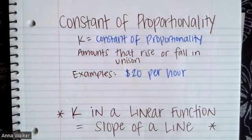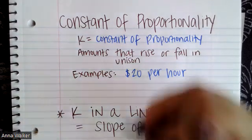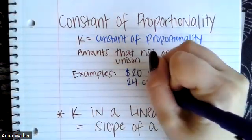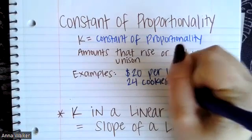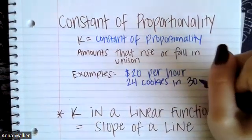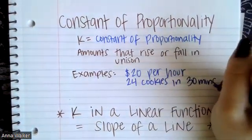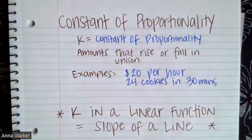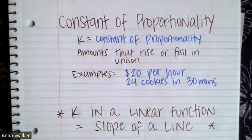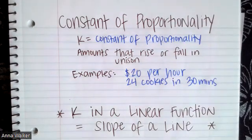Something else that could be considered a constant of proportionality is when we're talking about some sort of production. So like something in a factory or someone baking something. So if a robot could bake 24 cookies in 30 minutes, that could be considered a constant, right? The constant is every 30 minutes, 24 cookies are being made. They're keeping up a constant pace.